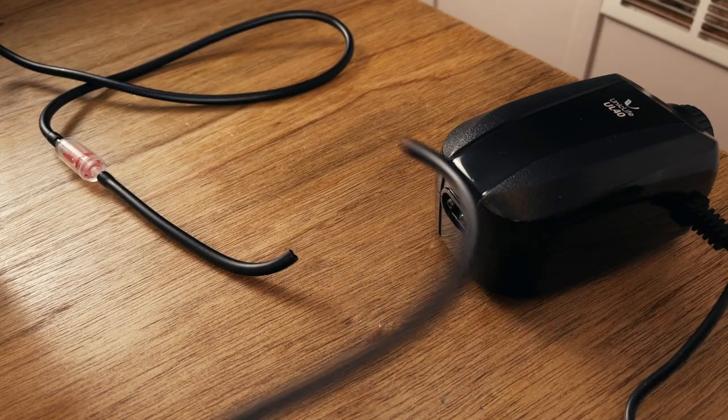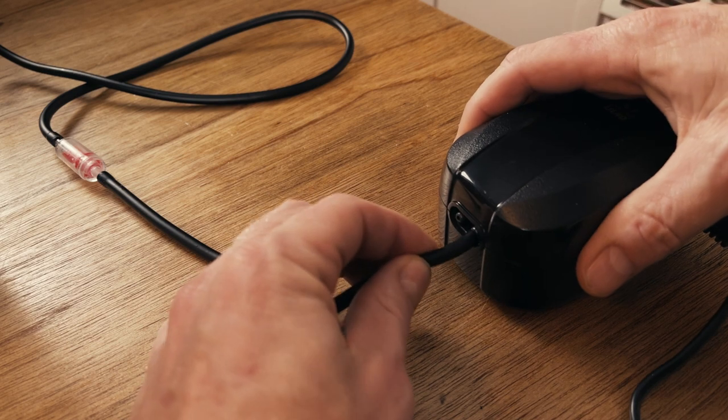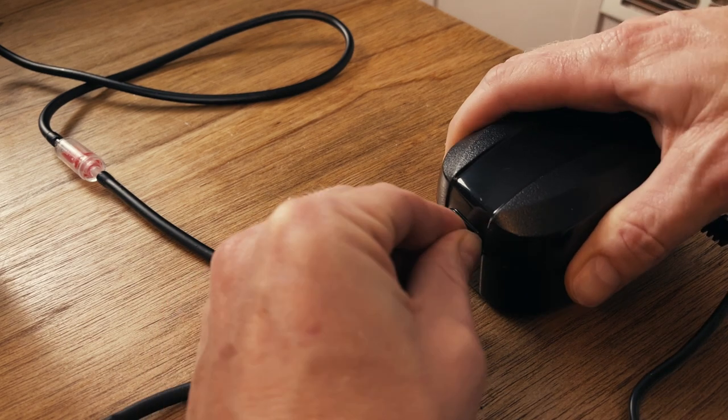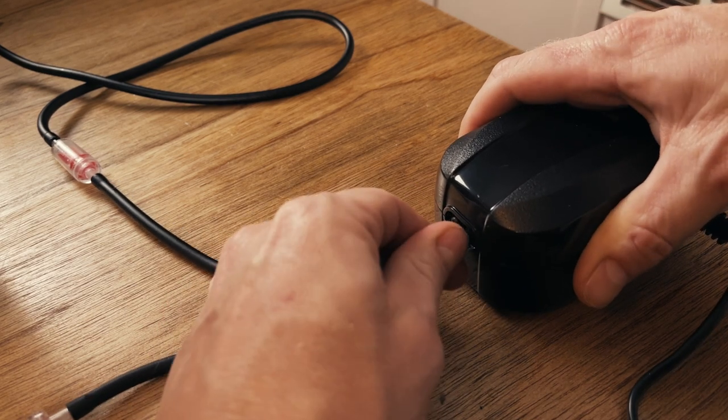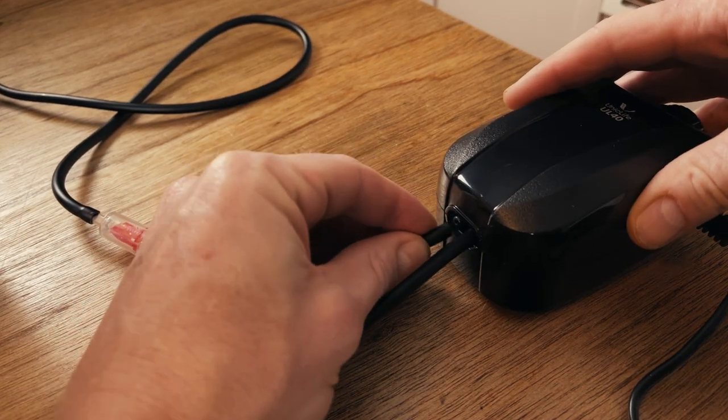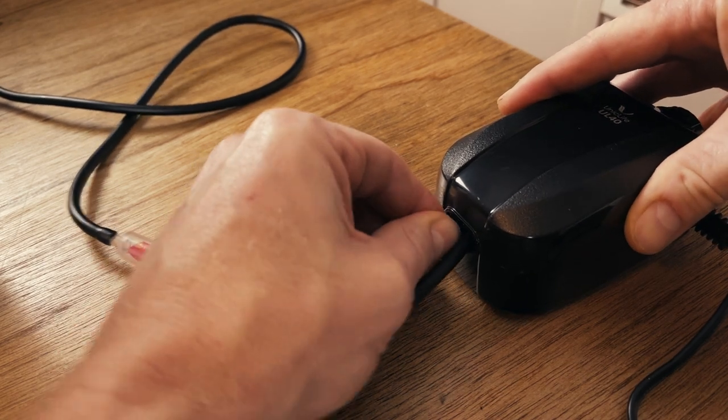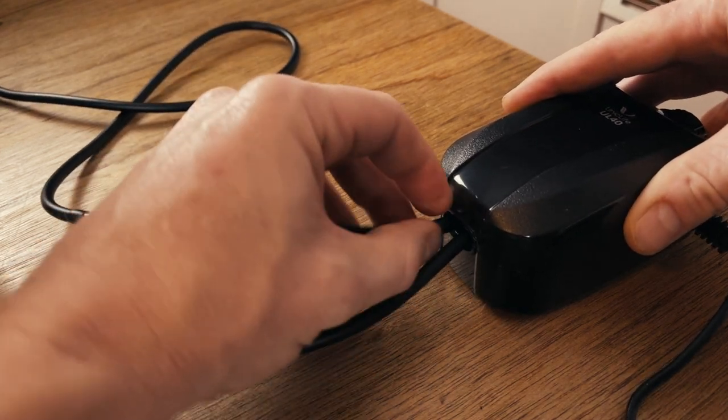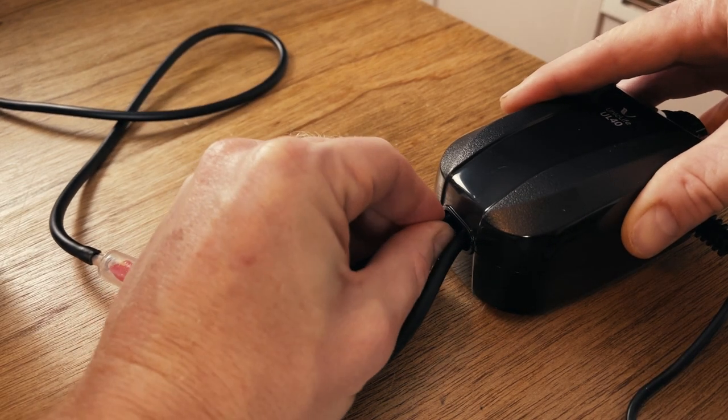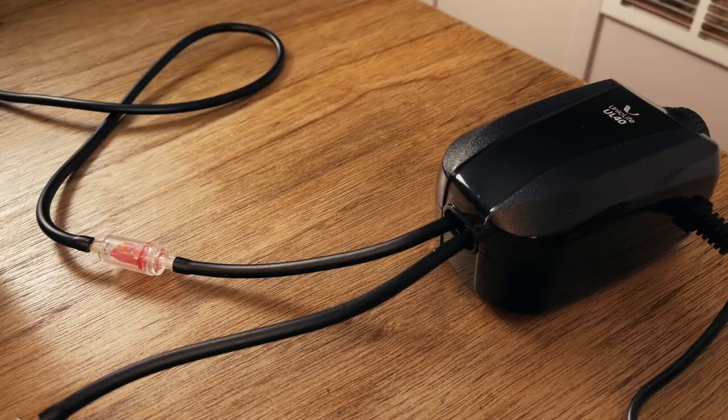Once you have the check valves connected to your airline go ahead and connect your airline to the aerator. And this is just a super cheap UnicLife UL40. I've got a bunch of these pumps. They don't put out a ton of air. I think they cycle about four liters a minute which is not great for larger tanks but for this small five gallon tote that has only got like two and a half gallons of water in it it'll be perfect.